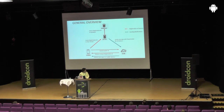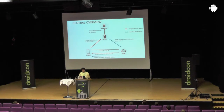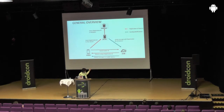If you look at the diagram, the red arrows relate to the registration part, and the blue arrows are about sending notifications. By repeating those two blue arrows again and again, we simply send different messages repeatedly.